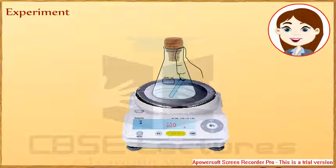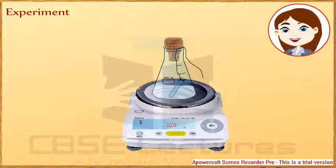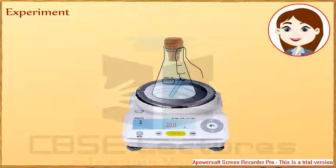Chemical reaction takes place. A white precipitate appears in the flask. Now, weigh the apparatus again — the mass comes out to be the same as it was before the reaction.